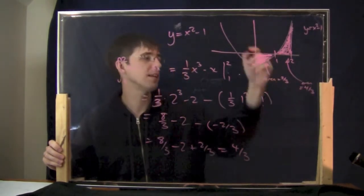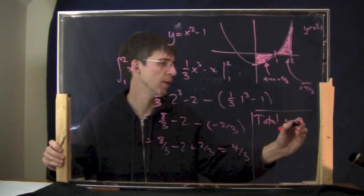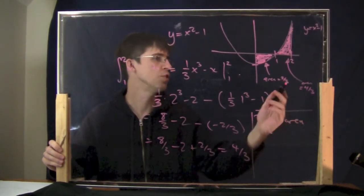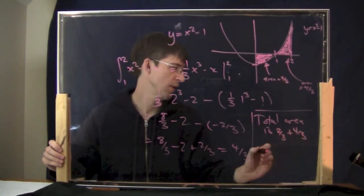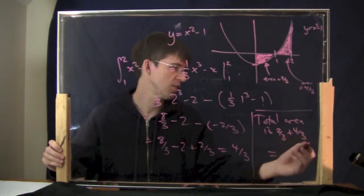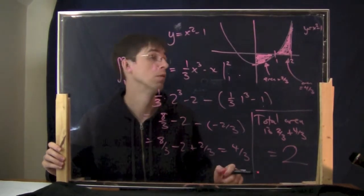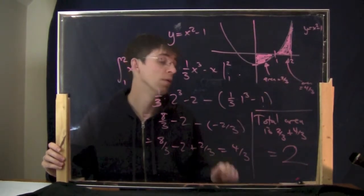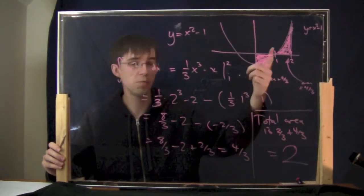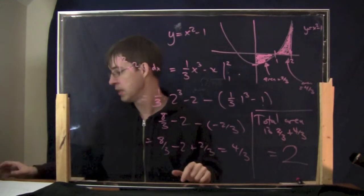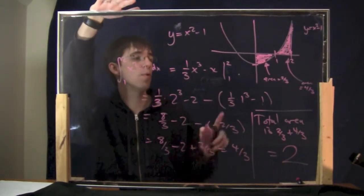The total area is 2/3 plus 4/3, which equals 6/3 = 2. The complete shaded area is 2. This is made tricky by the curve crossing the x-axis, which forces us to treat the two parts separately.